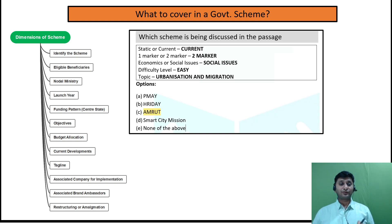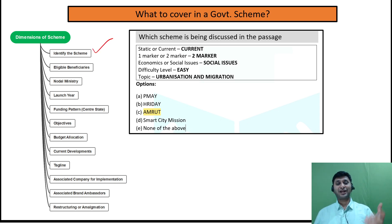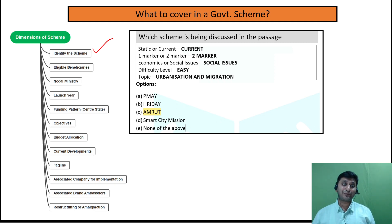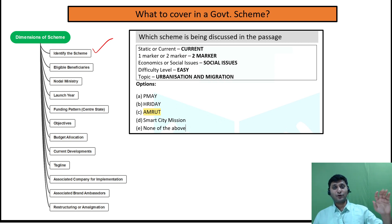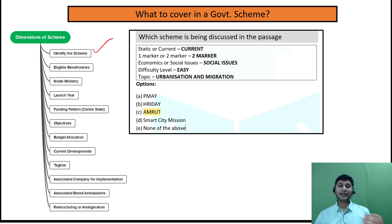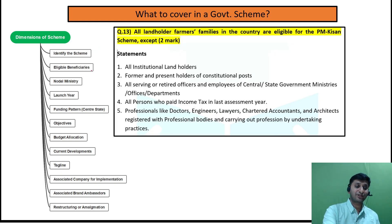The first and most important dimension is to identify the scheme. They will give you a passage in which the scheme name is not mentioned, and the first question will be: which scheme is being discussed in this passage? This dimension exists because many times when we are reading a scheme, we do not give it much attention. You can correlate only if you have a good understanding. So whenever you read a scheme, do not just try to cram — try to have an understanding.